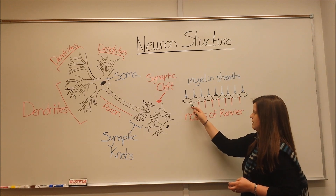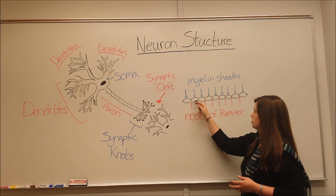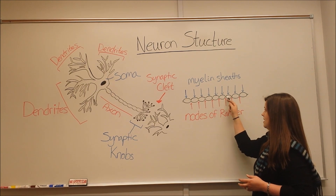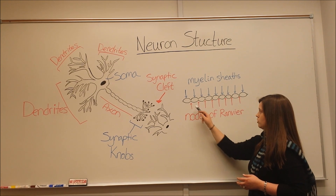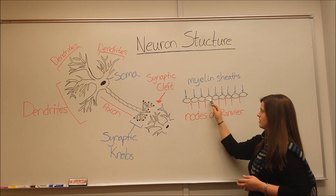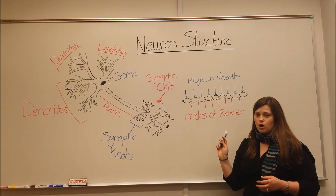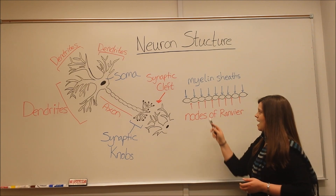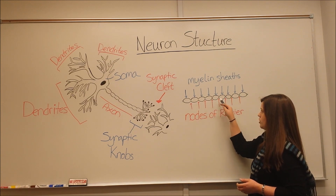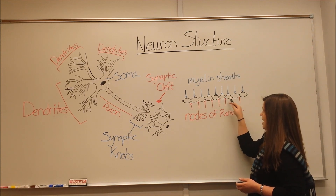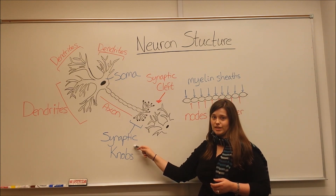It allows the chemical or electrical signal to propagate down the axon from node to node. In between the myelin sheets, we see the nodes of Ranvier, also called unmyelinated gaps. The electrical signal is able to hop from node to node as it goes down the axon, eventually reaching synaptic knobs.